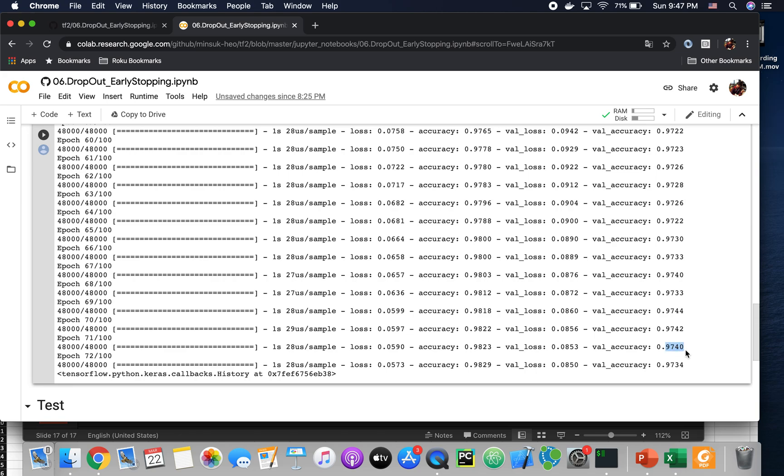9740 doesn't improve. 9734 doesn't improve. You can see the validation accuracy has not improved for 3 times. So we stop here at epoch 72, while we set epoch as 100 here. So you can see the dropout and early stopping in this Colab code.